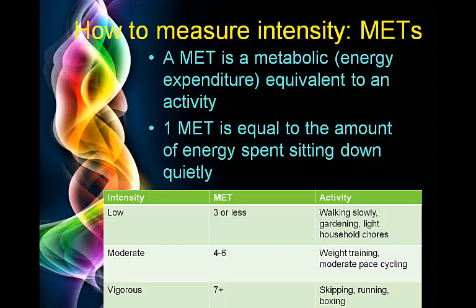Moderate intensity is four to six METs — that includes lightweight training and moderate pace cycling. During these activities you should be able to talk to someone and not be puffed out. Vigorous intensity is seven-plus METs, covering really intense exercise such as skipping, running, and boxing. At vigorous intensity someone would be quite puffed and using a lot of energy just to focus on the exercise.